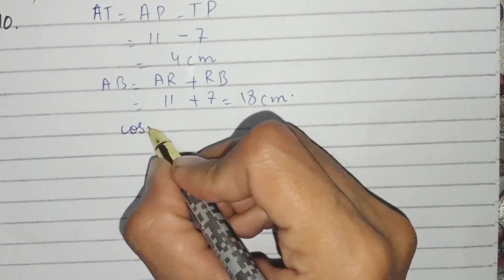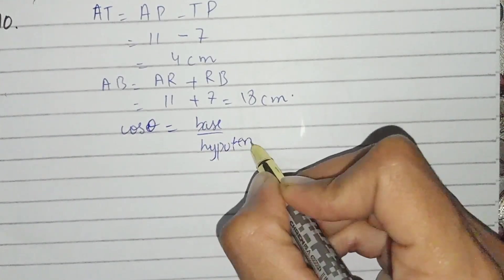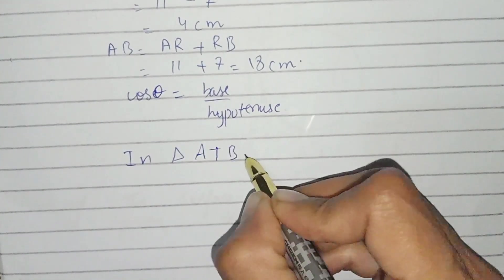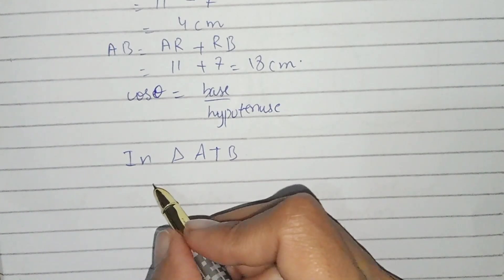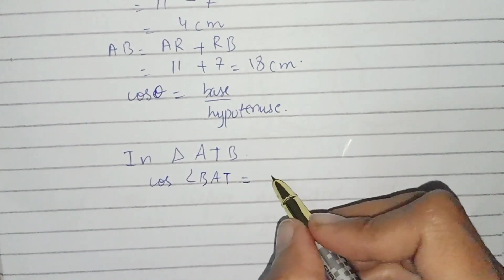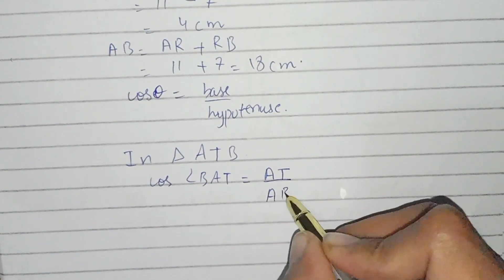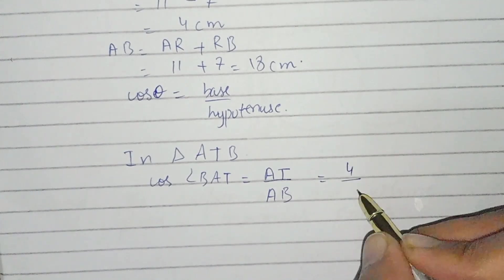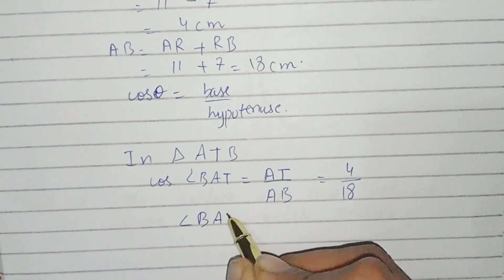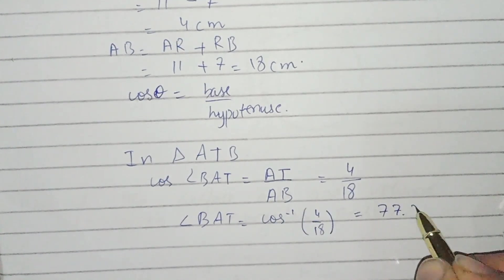Using cosine: cos(θ) = base / hypotenuse. In triangle ATB, cos(angle BAT) = AT / AB = 4 / 18. Therefore angle BAT = cos⁻¹(4/18) = 77.2 degrees.